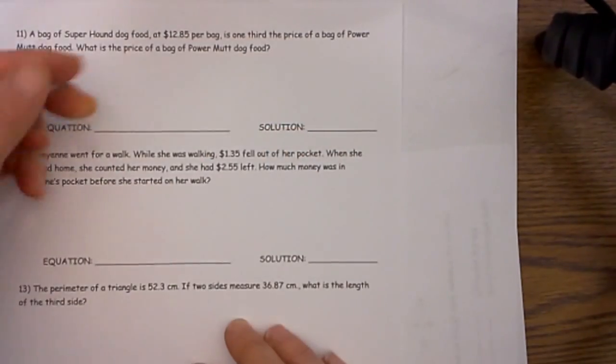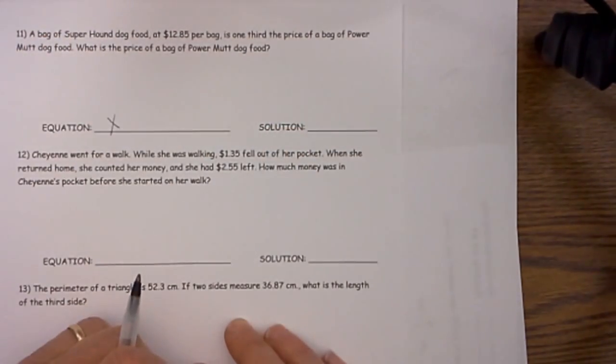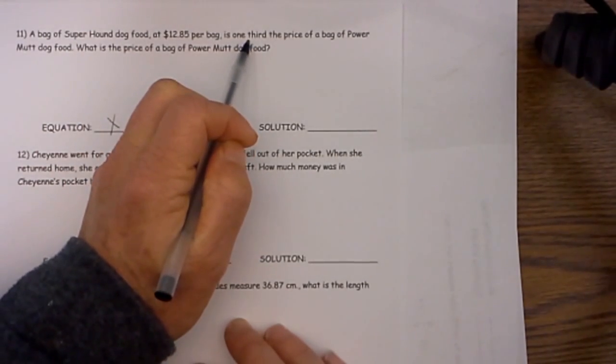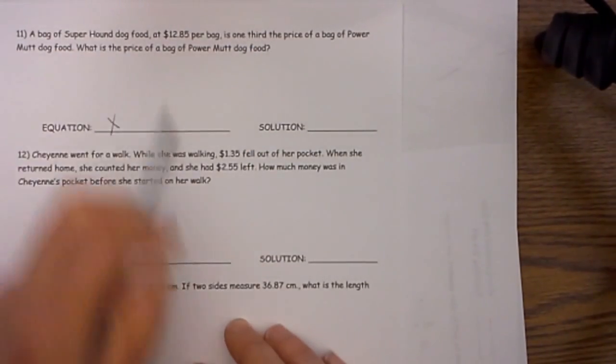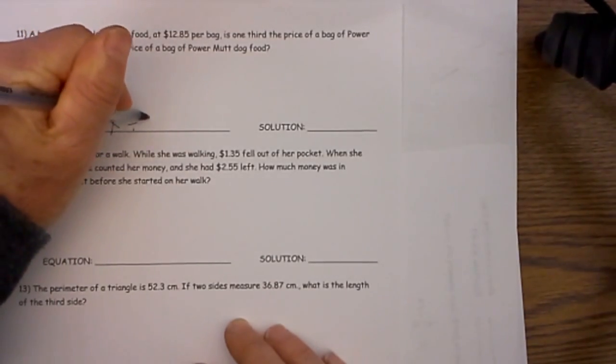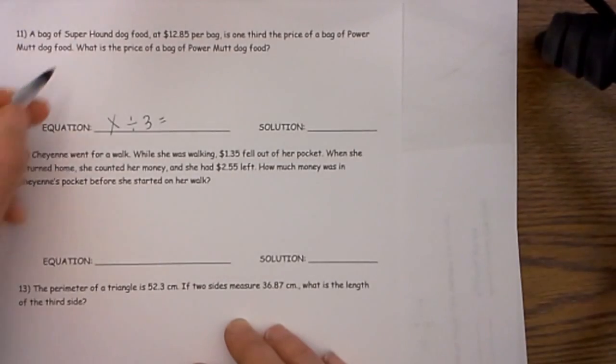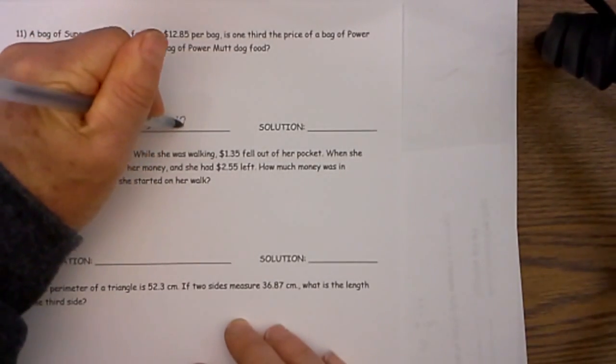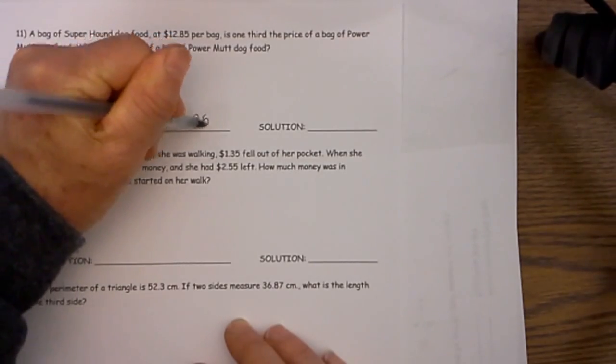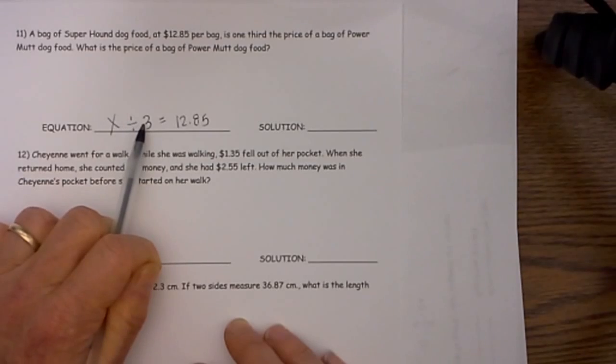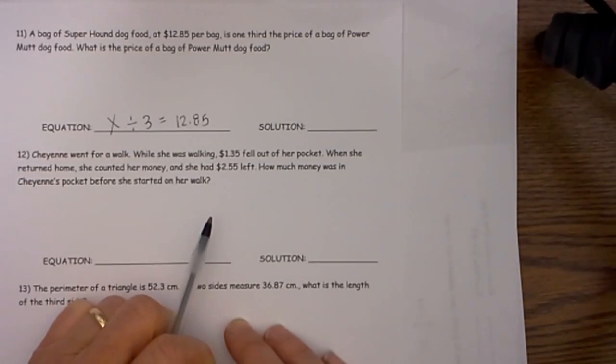We know that we have the price of the super hound and then we need to know so mutt dog food is x. And what do we know about x? Well we know that x is one third the price of the super hound dog food. So we are going to do divided by 3 and that is going to equal the super hound dog food. It must be a premium dog food. So now this is our equation. x divided by 3 equals $12.85.